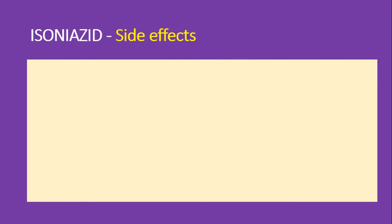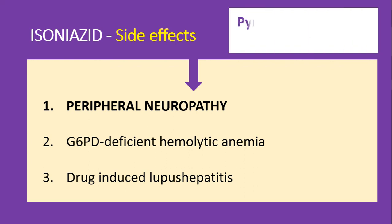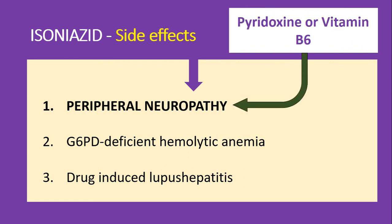Moving on to the side effects of isonia acid: the major and specific side effect is peripheral neuropathy. It can also cause hemolytic anemia in patients with G6PD deficiency, and it can cause drug-induced lupus and hepatitis. The development of peripheral neuropathy can be prevented by administration of pyridoxine, also called vitamin B6, which prevents peripheral neuropathy.